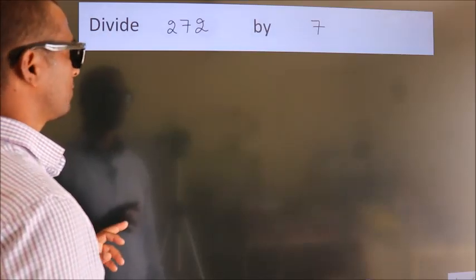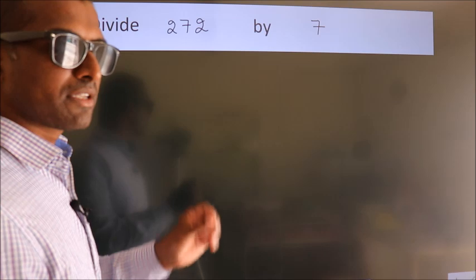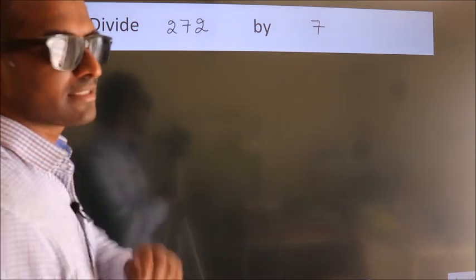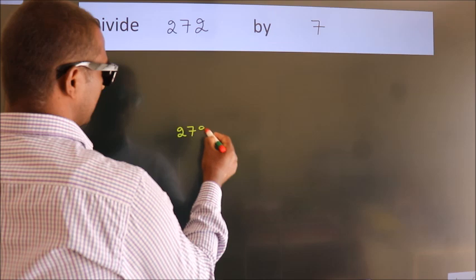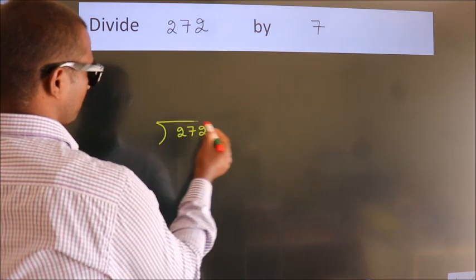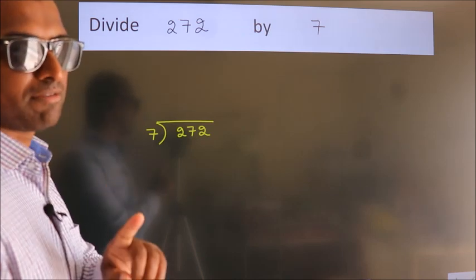Divide 272 by 7. To do this division, we should frame it in this way. 272 here, 7 here. This is your step 1.